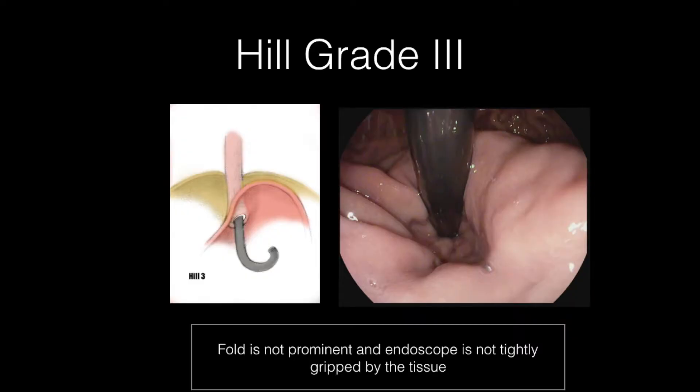In comparison to grade 1 and 2 valves, a grade 3 gastroesophageal valve has no prominent fold at the entrance of the esophagus into the stomach and the endoscope is not tightly gripped by the tissues. The valve stays open under full insufflation during the examination.